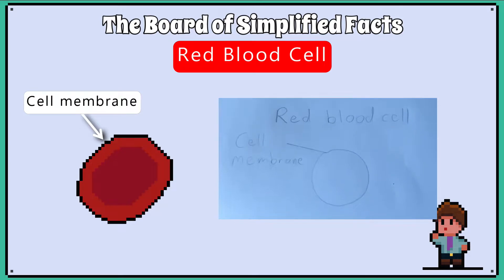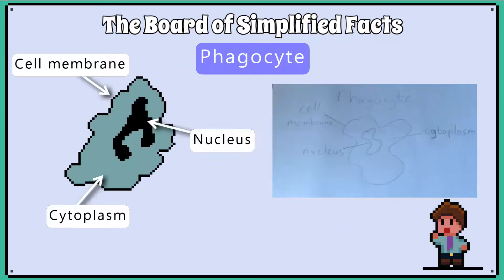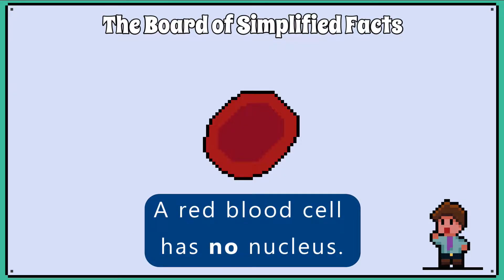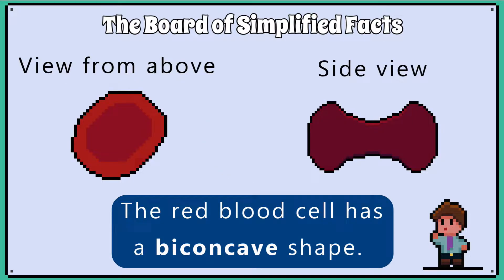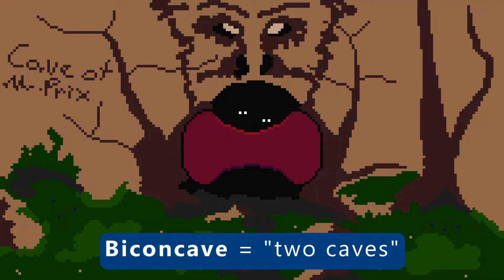We need to know how to produce basic drawings of a red blood cell and a white blood cell known as a phagocyte. A red blood cell has no nucleus, so we only need to label the cell membrane. The red blood cell has a biconcave shape — from the side you can see two caves.